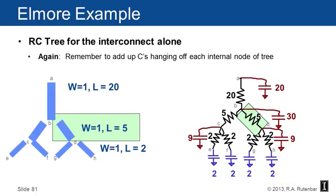Here's the RC tree for the interconnect alone. I'm showing you the tree on the left, nodes A, B, C, D, E, F, G, H. On the right hand side, I'm showing you the RC tree. From A to B, there's a resistor of 20. From B to C and B to D, there's resistors of five. From C to E and F, from D to G and H, there's resistors of two. There's a capacitor of 20 at node A, 30 at node B, nine at each of nodes C and D, and two at nodes E, F, G and H. That's what the core of the wire looks like if we turn it into an RC tree.